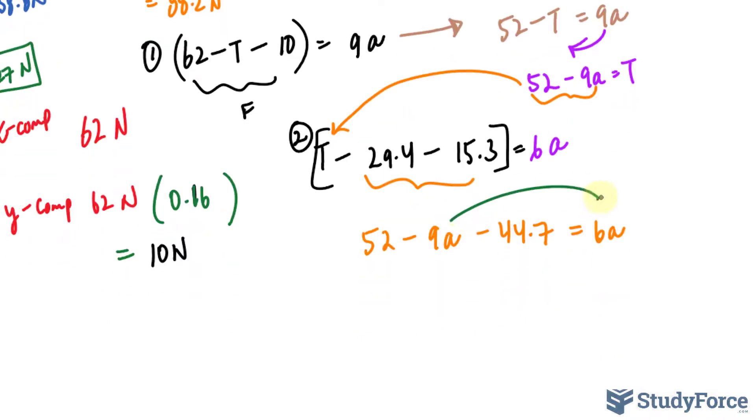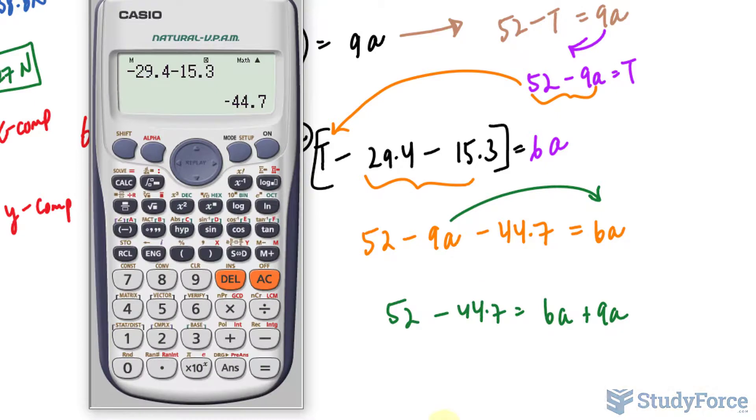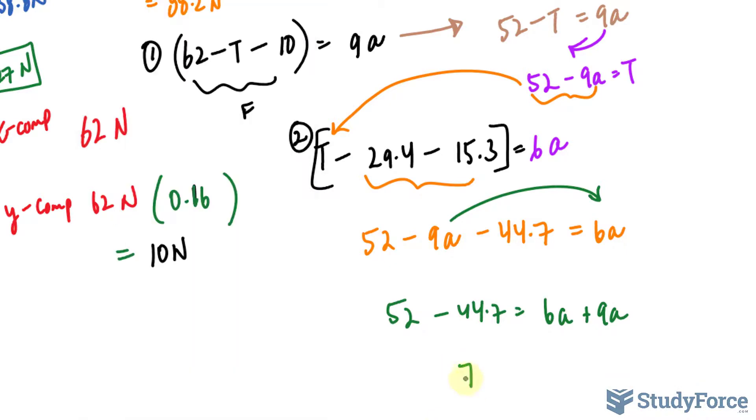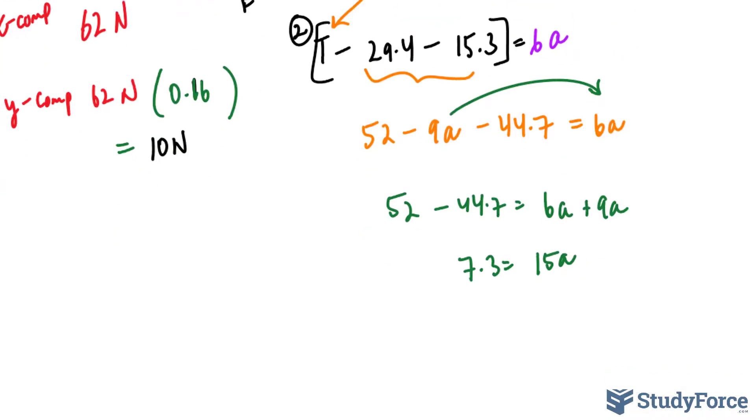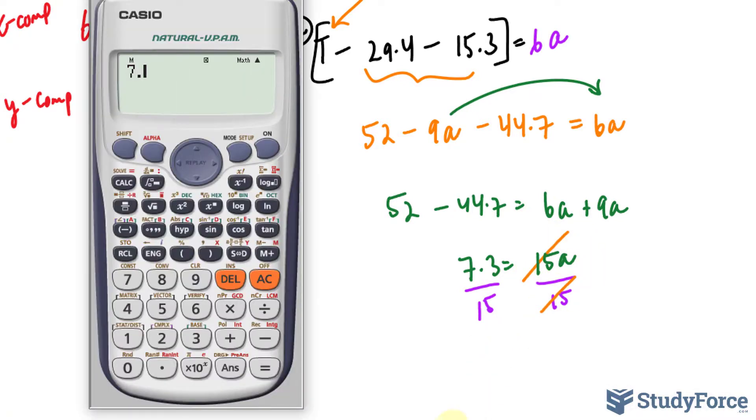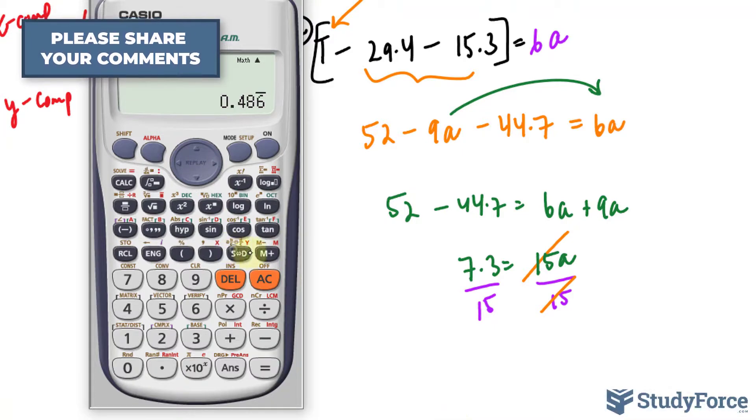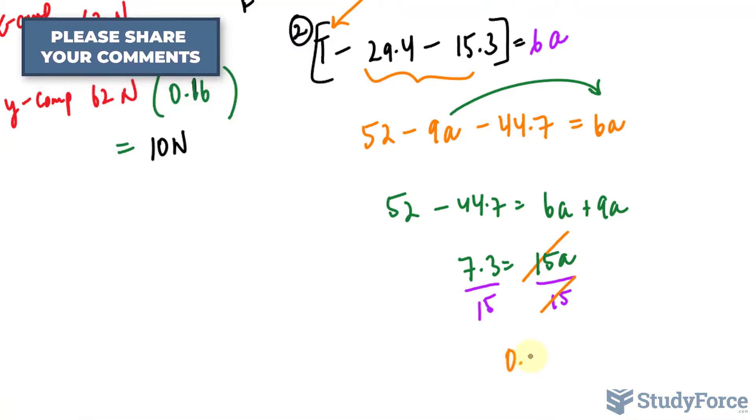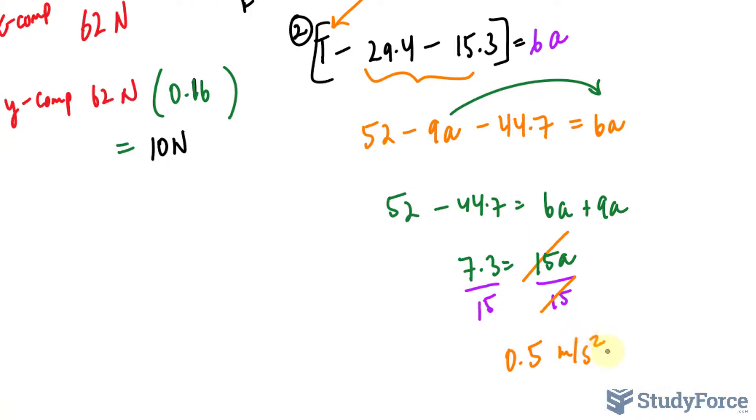Continuing forward, I'll bring that like term to this side. So 52 minus 44.7 is equal to 6a plus 9a. I have 52 minus 44.7, that's the left side of the equation, 7.3. And the right side is 15a. Now dividing both sides by 15, that 15 and that 15 cancel out. 7.3 divided by 15 makes 0.5 meters per second squared.